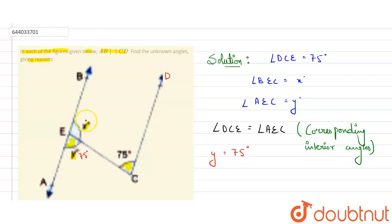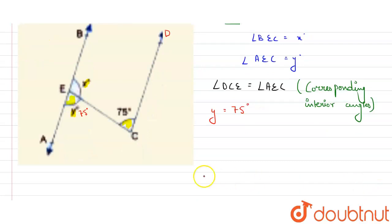Okay, so now there are two ways of finding x. This is a straight line and we know that sum of angles on a straight line is always 180 degrees. And we also know that sum of co-interior angles of a transversal of two parallel lines is also 180.